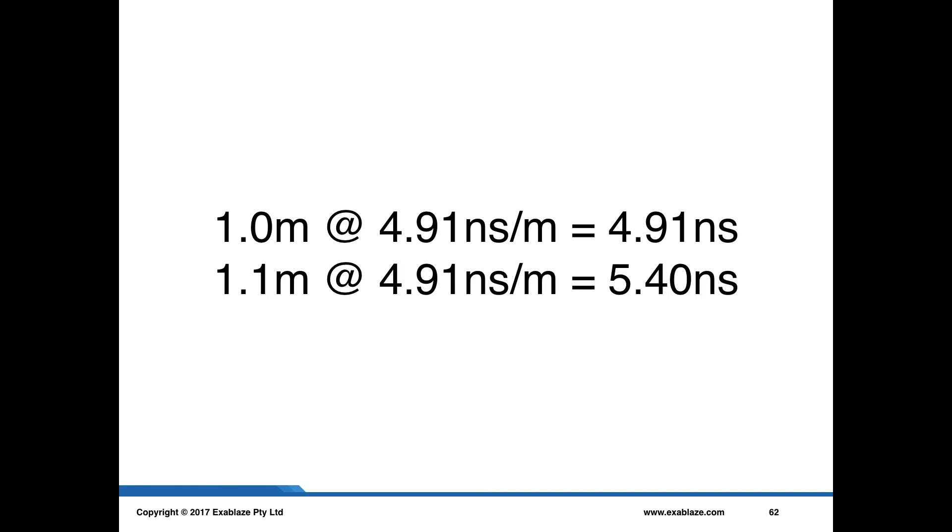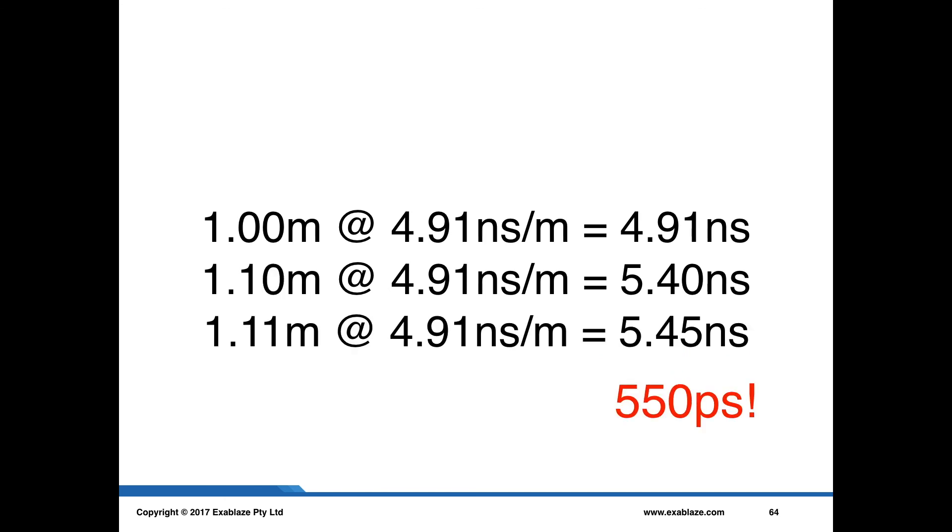But what if we were ever so slightly wrong? What if the real value was 1.1 meters? Well, now we've got a 5.4 nanosecond delay, which is a 500 picosecond difference in our measurement. And similarly, if we got it just a little bit wrong and called it 1.1 meters, there would be a 550 picosecond delay. So fairly substantial delays in the scale of picoseconds can be attributed to getting our lengths just not quite right.